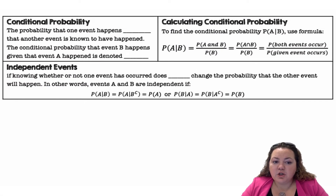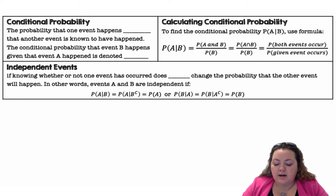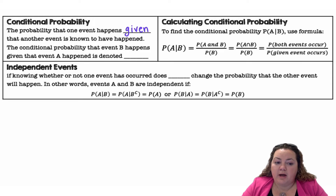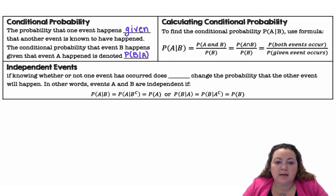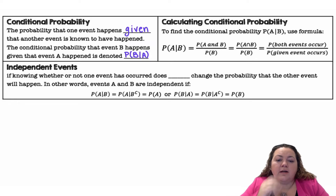Conditional probability is the probability that one event happens given that another event is known to have happened. The conditional probability that event B happens given that event A happened is denoted as the probability of B given A. That vertical line, we're going to read that as 'given.'